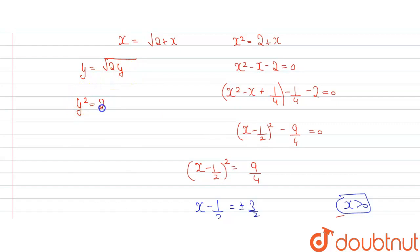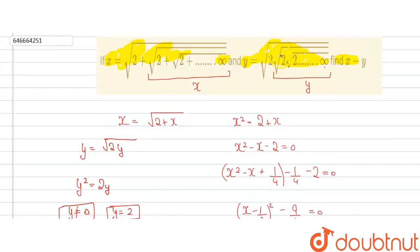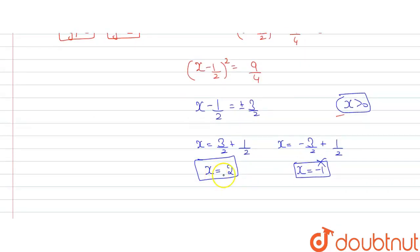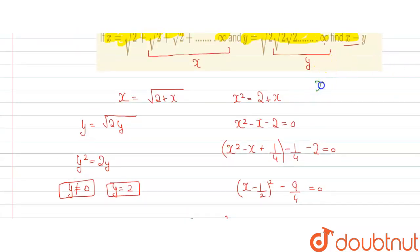Squaring both sides gives y² = 2y. From this equation, y = 0 or y = 2. But y cannot be 0, since all terms are positive and this is a large number. So y = 2. Now we need to find x − y: since x = 2 and y = 2, we get x − y = 2 − 2 = 0. So the value of x − y equals 0.